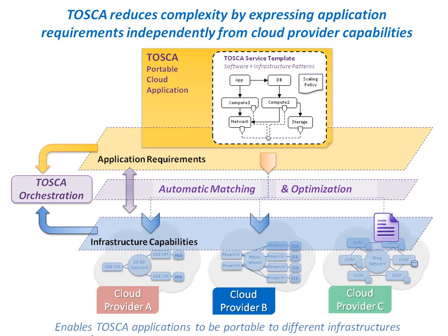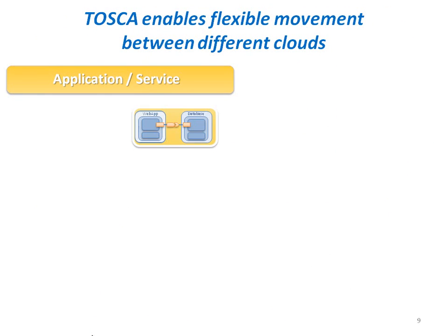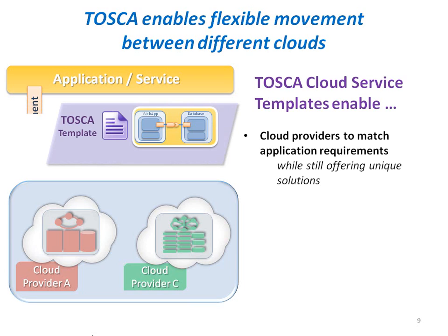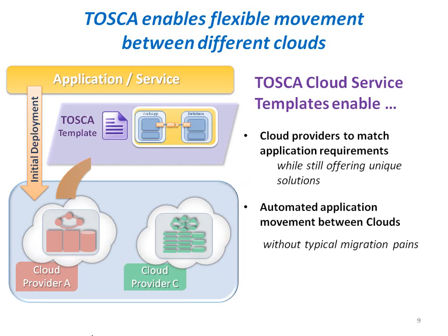This decoupling between the application and cloud provider, only found in Tosca, enables cloud application owners to achieve true application portability and offers them the ultimate in consumer choice when selecting a cloud provider. The concept of Tosca-enabled portability allows optimal initial deployment of an application to the preferred cloud, and gives application owners the ability to distribute their applications across clouds or move those applications to new cloud providers as needed over time.